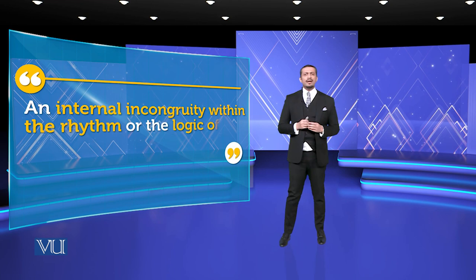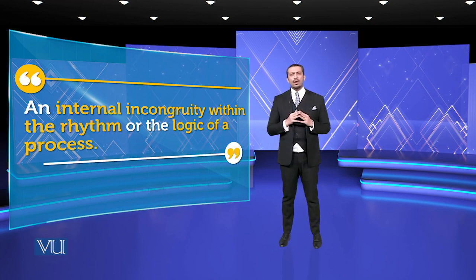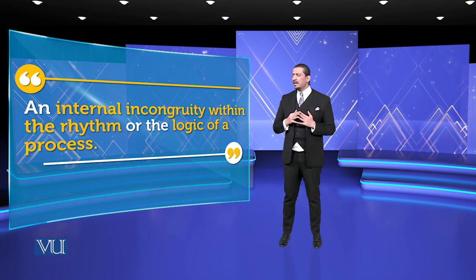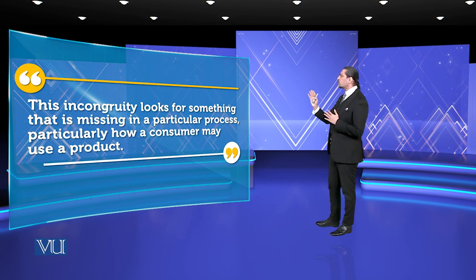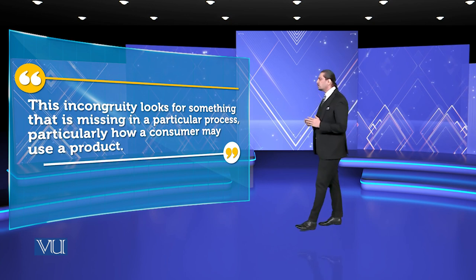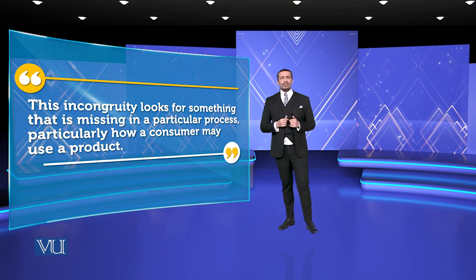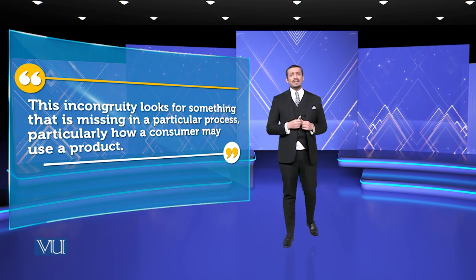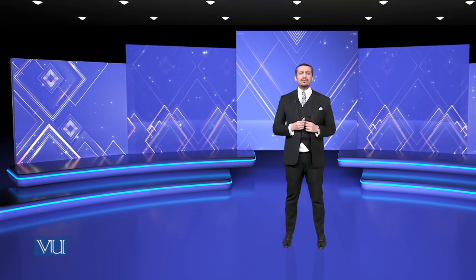This incongruity exists within the rhythm and logic of the process flow. It looks for something that is missing in a particular process — particularly how a consumer may use a product. There is the supply side and the market side. If my upper-class segment is here, my supply must also match. In the middle class, I will have to deliver accordingly, so my segment-to-segment inter and intra networking in the supply chain must be aligned.